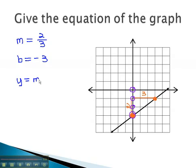Using y equals mx plus b, we can simply plug in the information we know. y is equal to m, the slope of this line is 2 thirds, x, plus b, or negative 3.